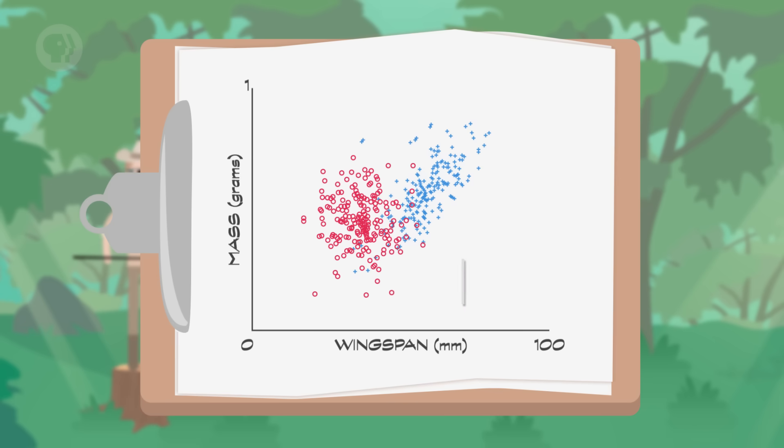Here, I've plotted data for 100 emperor moths in red, and 100 lunar moths in blue. We can see that the species make two groupings, but there's some overlap in the middle. So it's not entirely obvious how to best separate the two. That's what machine learning algorithms do – find optimal separations.